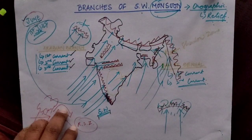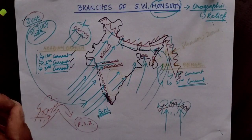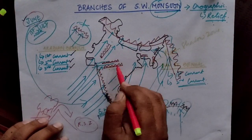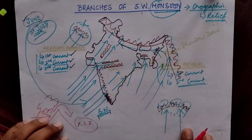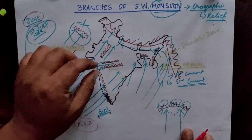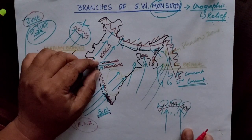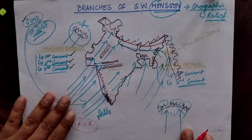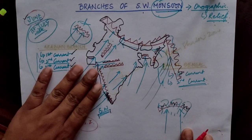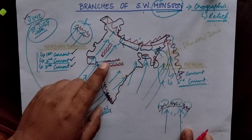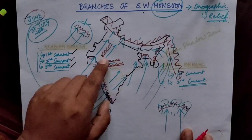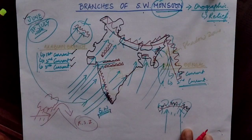The second current of the Arabian branch passes through the Narmada and Tapti river valleys, which create a trough or gap in that region. From there, this current enters, hits the Satpura and Vindhya mountains, and showers rainfall on the central part of our country.